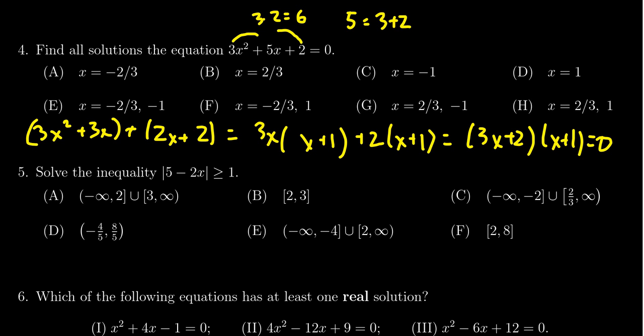Using the zero product property we set each and every one of these factors equal to 0. If you set the first factor 3x plus 2 equal to 0 you would end up with negative 2 thirds. Just solve the linear equation. For the second one if we set x plus 1 equal to 0 we end up with negative 1.